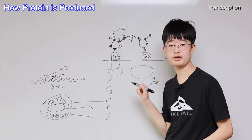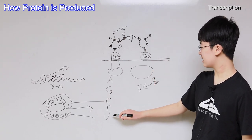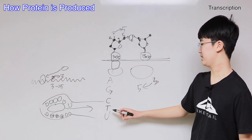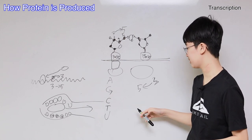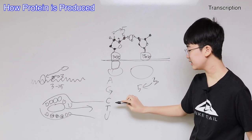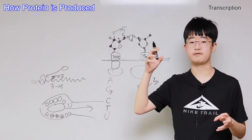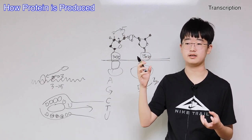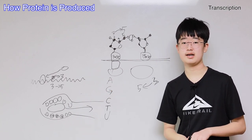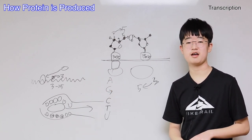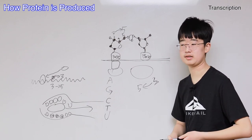Uracil is used instead of thymine in RNA. I think the reason is because thymine is the only base that does not have an affinity for the sugar called ribose. That might be important but I don't really know about this one.